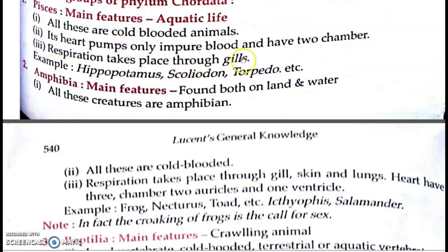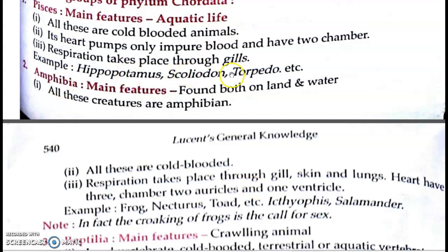Its heart pumps only impure blood and has two chambers. Inke heart mein two chambers hote hain — dhire-dhire jaise advanced animals aate jaayenge, unke heart ke chambers bhi badhte jaayenge, jaise human being mein four chambers hote hain. Respiration takes place through the gills — inme lungs nahin hote, gills hote hain kyunki yeh paani mein paaye jaate hain. Examples: hippocampus, squaliodon, torpedo, etc.